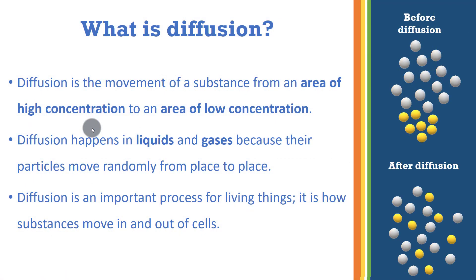What is diffusion? Diffusion is the movement of a substance from an area of high concentration to an area of low concentration. As you can see in the diagram on our right, diffusion happens in liquids and gases because their particles move randomly from place to place.